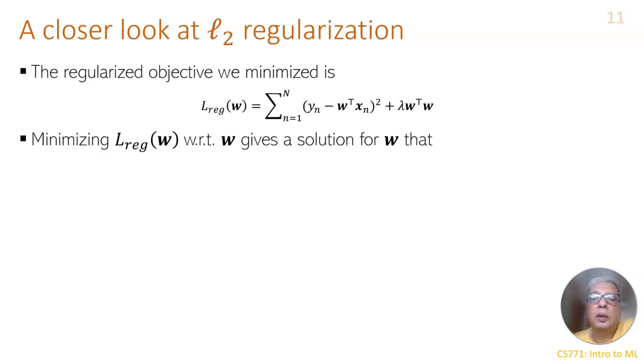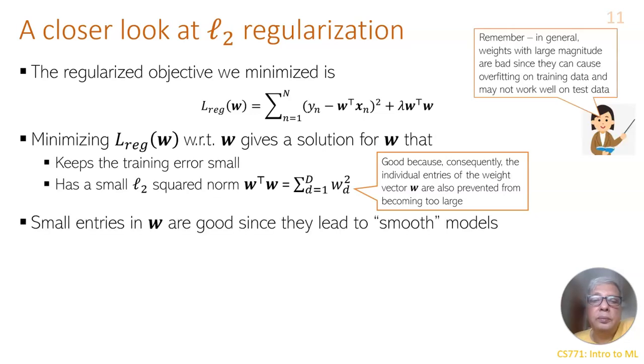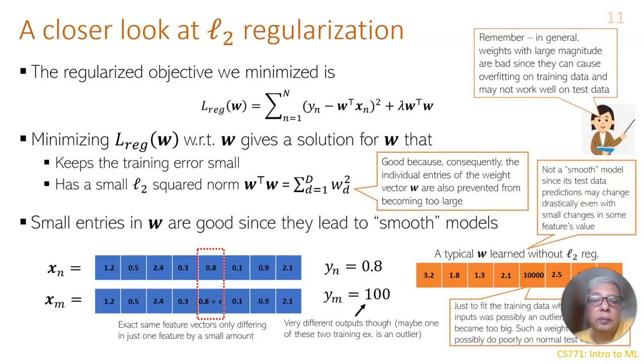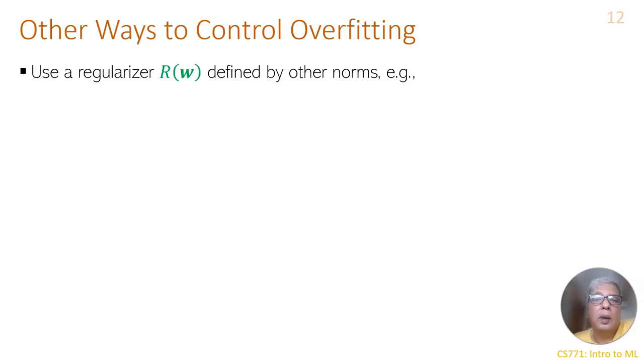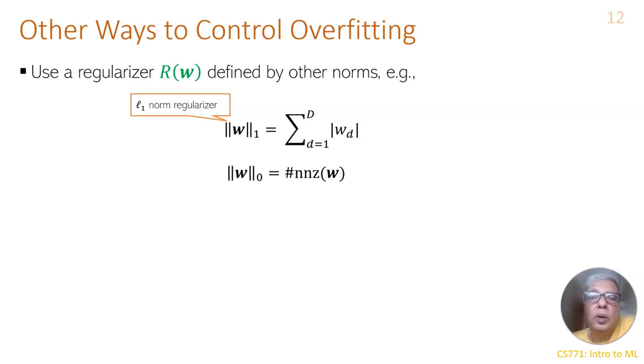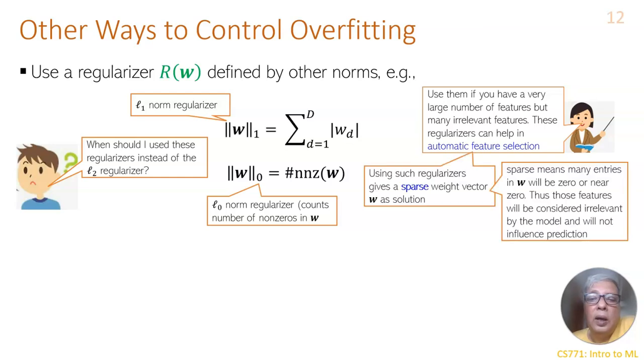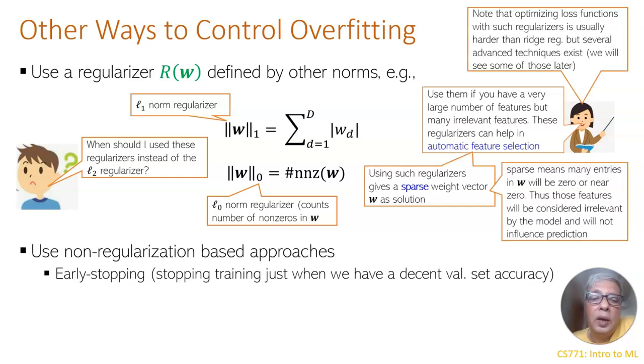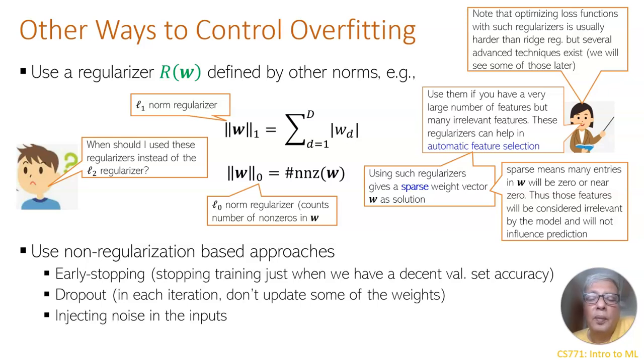And this is all about ridge regression. Ridge regression with small values of lambda works well to remove overfitting and underfitting.